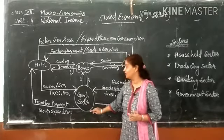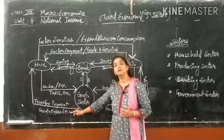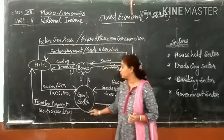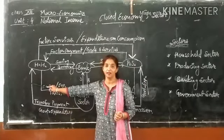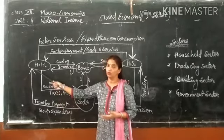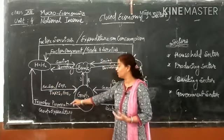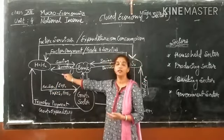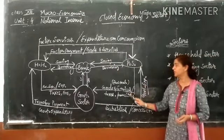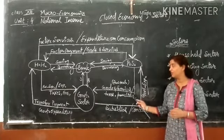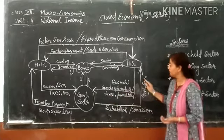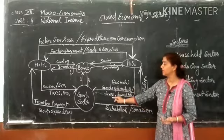Other than transfer payments, the government also spends money in terms of expenditure. For example, if there is a government employee, the government provides salary to the household sector. The government sector also consumes goods and services and intermediate goods as raw material from the producing sector, so producing sector provides goods and services to the government sector as well.